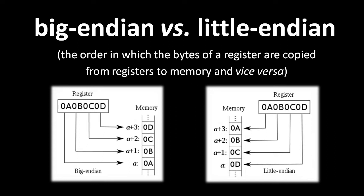As a binary number, 0A is the most significant byte — the byte representing the most significant digits. The question is: when we copy the register contents to some address N in memory, do we copy the most significant byte 0A to N, 0B to N+1, 0C to N+2, and 0D to N+3, or do we copy in the opposite order — copying the least significant byte 0D to N, 0C to N+1, 0B to N+2, 0A to N+3? A CPU that starts with the most significant byte uses the big Endian scheme, and a CPU that starts with the least significant byte uses the little Endian scheme. In both cases, the order is maintained when copying from memory to a register, so copying a register's contents to address N and then copying from address N back to the register leaves the register contents unchanged.